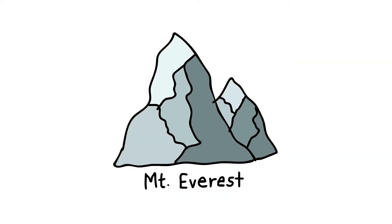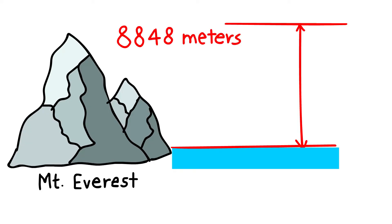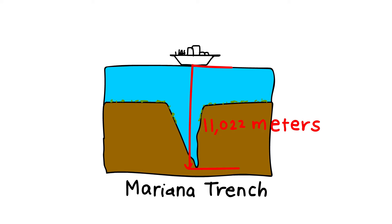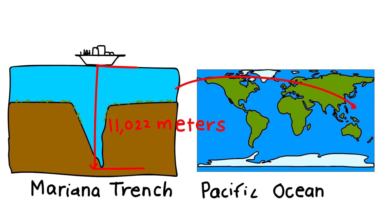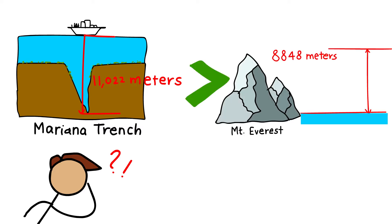The highest mountain peak, Mount Everest, is 8,848 meters above sea level. The greatest depth of 11,022 meters is recorded at Mariana Trench in the Pacific Ocean. Could you imagine that the depth of the sea is much more than the height of the highest point?